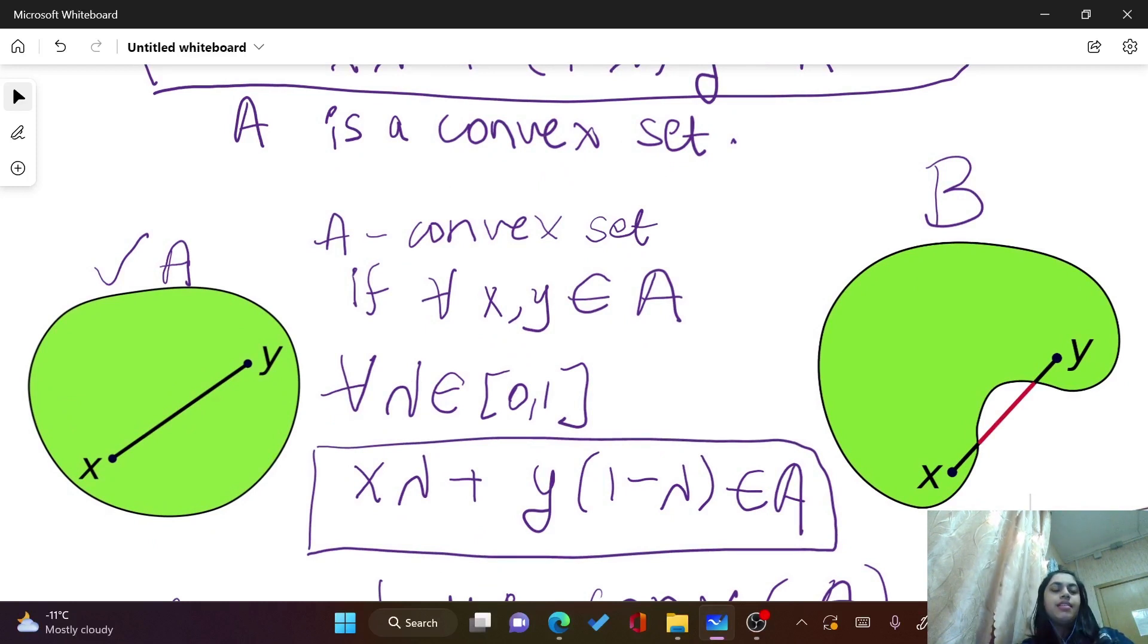So as you can see for the set A and B, this red portion doesn't include in the graph B and therefore this is not convex. And this is convex.